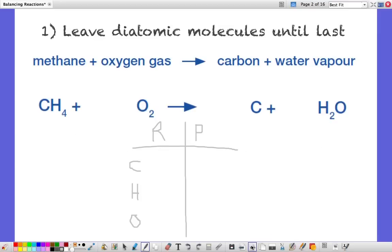The first is to leave any diatomic molecules until the end, and by diatomic I mean things with two atoms, things like oxygen O2, hydrogen H2 and so on. First you get the word equation and then you write the correct formulas equation. The first thing to do is set up an inventory of the reactants on the left and the products on the right and work through them, leaving the oxygen in this case till last.